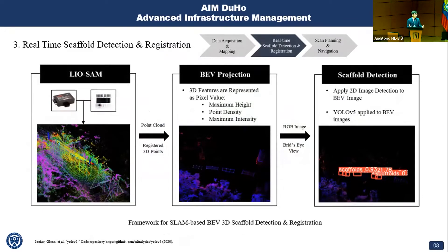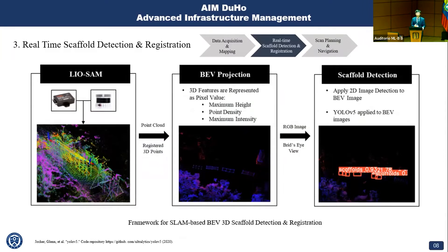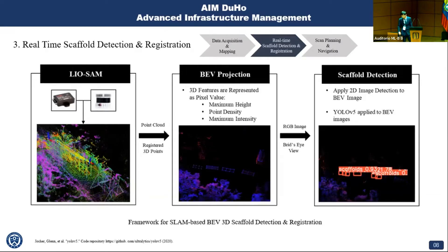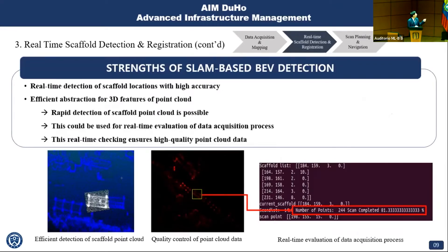Now I'll talk about the real-time scaffold detection and registration process. The robot needs to know where the scaffold is to automate the scanning process. Since I use LiDAR and SLAM, I use point clouds to detect and register scaffolds. But the problem is that 3D point clouds have very high computational cost, making real-time detection very challenging. That's why I applied bird-eye view projection to the 3D SLAM output. The idea is to project the 3D SLAM registered point clouds into a 2D image in XY coordinates, so 3D features are represented as pixel values. YOLOv5, a well-known deep learning detection algorithm, is then applied to these bird-eye view images to detect and register scaffolds, enabling real-time detection with high accuracy.